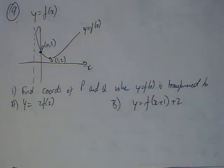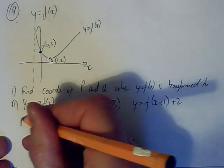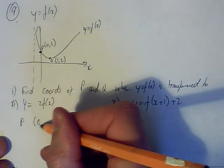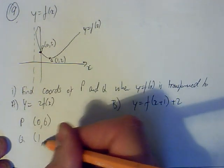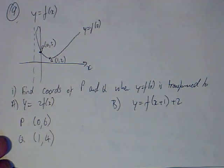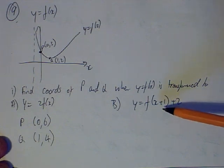So, basically, because that 2 is on the outside, it's a vertical stretch, and it's a stretch because it's a multiple of 2. So, all the y values are just going to get doubled, and nothing happens to the x values. So, the answers are 0, 6 for P, and for Q, when you double the y value but leave the x one alone, it's 1, 4.